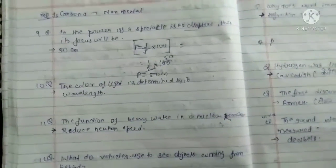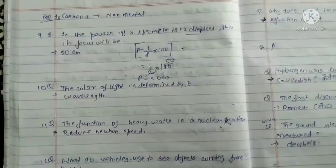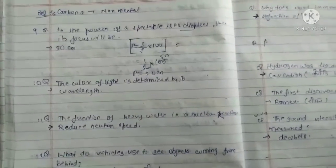The function of heavy water in a nuclear reaction. Heavy water in a nuclear fission reaction reduces neutron speed.